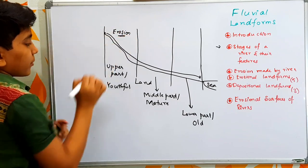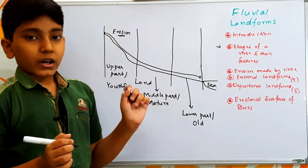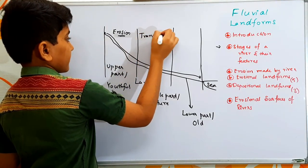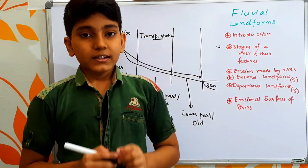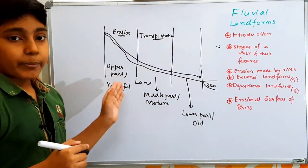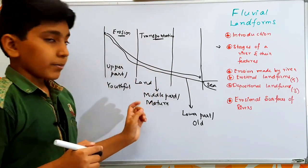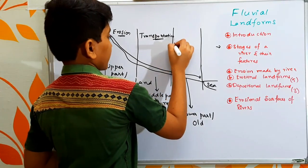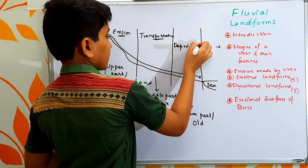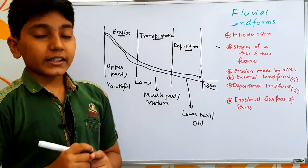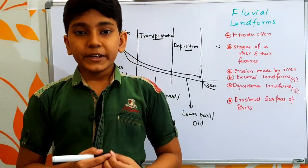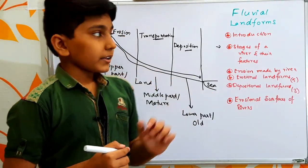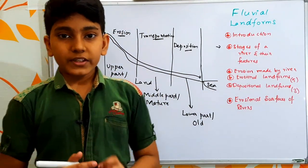The second part is the middle part or middle course, also referred to as the mature stage. The third is the lower part or lower course, also considered the old stage. In the upper part we experience weathering and erosion. In the middle part we mainly experience transportation of eroded particles. In the lower part we experience deposition, as the river moves at around one to two meters per second.